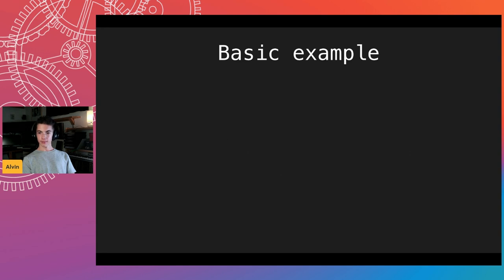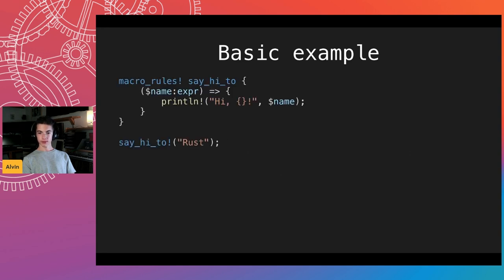Here's a very basic example of how they look. You have `macro_rules!`, then `say_hi_to` — the name — then an argument list, and then the content of the macro. Macro variables always start with a dollar symbol, then the name, colon, and a type. There are multiple types: expression, statement, visibility, attributes, and so on. They're called like `println!` — using `say_hi_to!` and then the arguments.